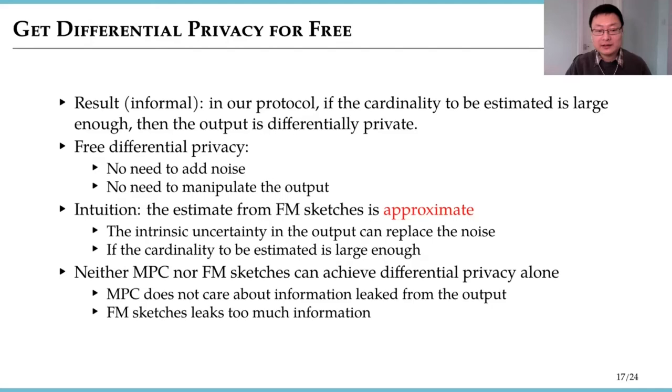How is that possible? The intuition is this. The estimate from the FM sketch is approximate. That means it's already uncertain to some degree and the uncertainty here can be used to replace the noise for differential privacy. The result is interesting because neither MPC nor FM sketch can achieve differential privacy alone. But when we put them together, we can get differential privacy for free.